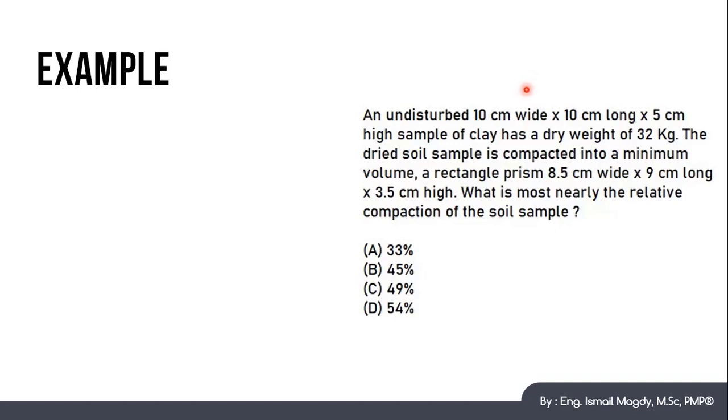So we have the dimension of the original sample. First thing, we have the weight of the sample, which is 32 kg. We have the volume of the undisturbed sample, which we can call V field, which is 10 by 10 by 5, total of 500 cm cube. And we have the V minimum, which was compacted, which is 8.5 by 9 by 3.5, which is total 267.75 cm cube.